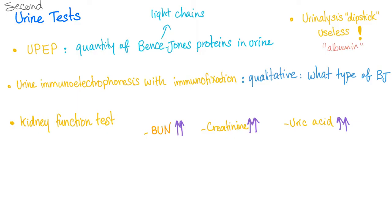Urine protein electrophoresis gives the quantity of Bence Jones proteins — which are the light chains — but it does not tell you whether they are kappa or lambda. For that, we use urine immunoelectrophoresis or immunofixation, which is qualitative and tells you the type of Bence Jones proteins present.